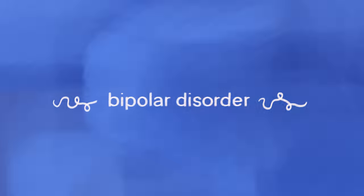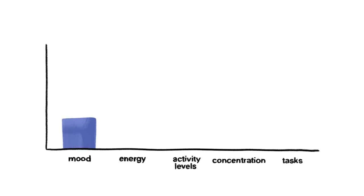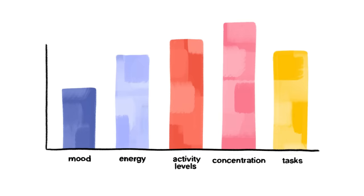Number four, bipolar disorder. Bipolar disorder is yet another highly misunderstood condition. Some people water it down to just mood swings and interchange the term bipolar with mood swings. But bipolar disorder is much more complex than that. Bipolar disorder is a mental disorder that causes unusual shifts in mood, energy, activity levels, concentration, and the ability to carry out everyday tasks.